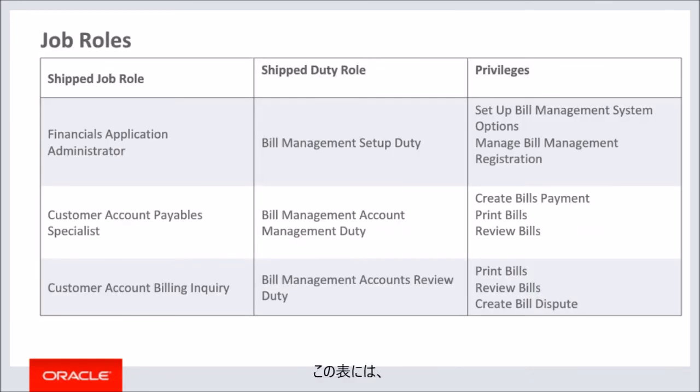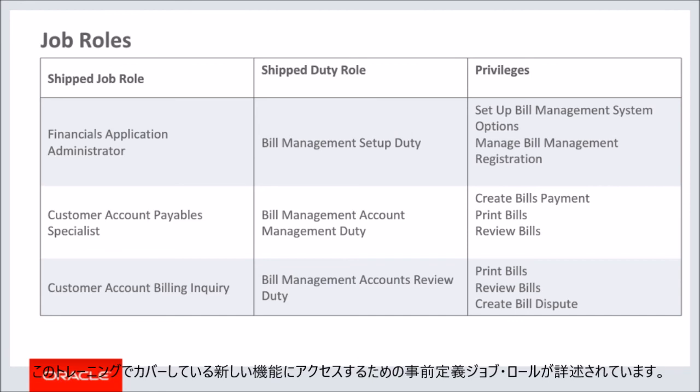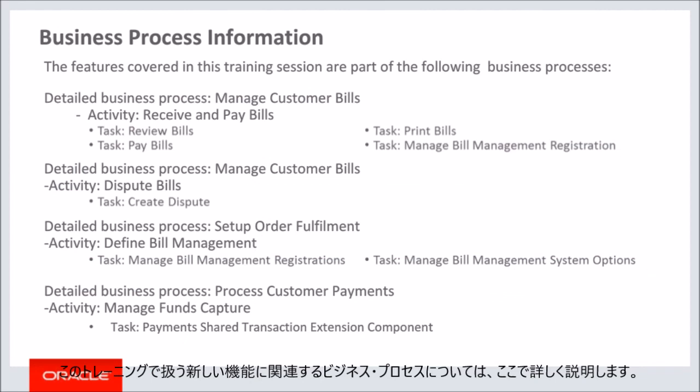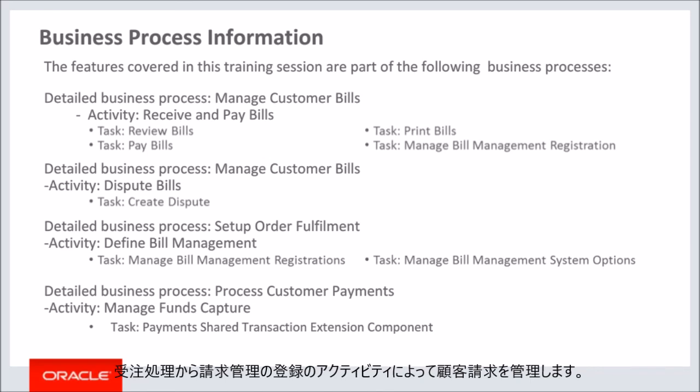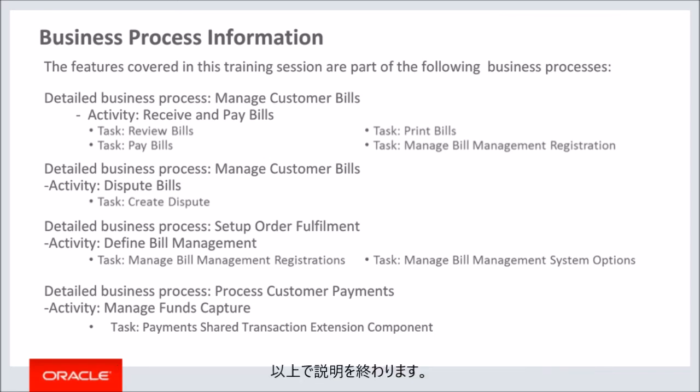This table details the shipped job roles that will access the new capabilities covered in this training. The business processes associated with the new capabilities are also detailed here. The high-level business process is Order Fulfillment, Manage Customer Bill, with the activity Register for Bill Management. This concludes the presentation. Thank you for listening.